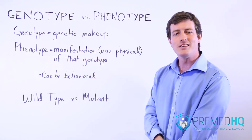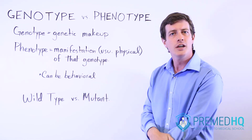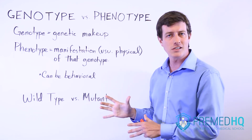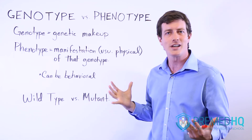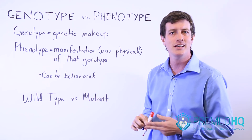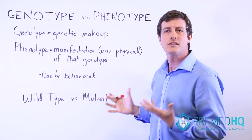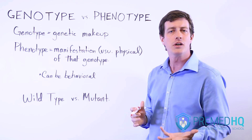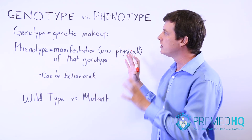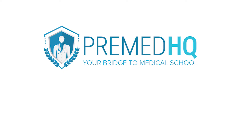Now we'll get into heterozygosity versus homozygosity, dominance and recessiveness patterns, and some unusual types of dominance like codominance and incomplete dominance. We'll also discuss penetrance and variable expressivity, which will give you a good background for some of the trickier genetics questions.